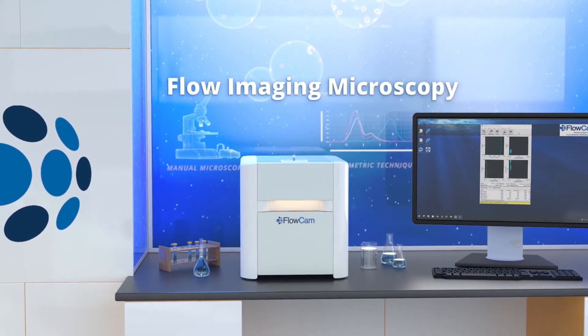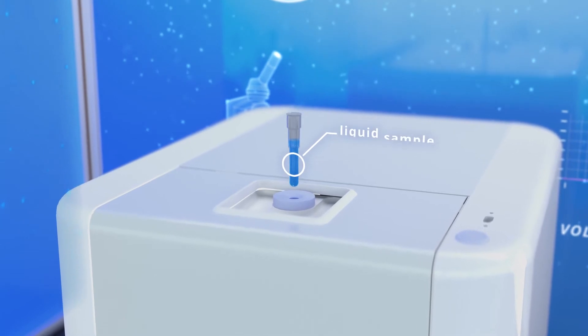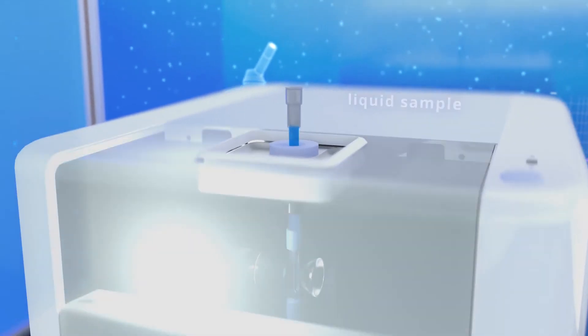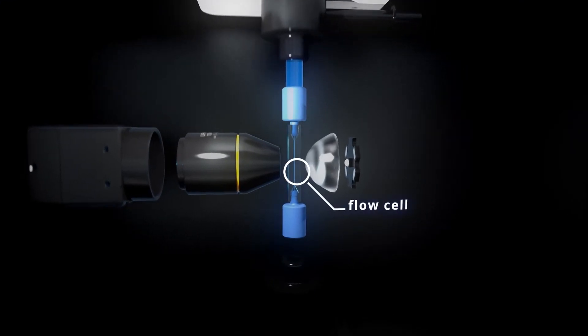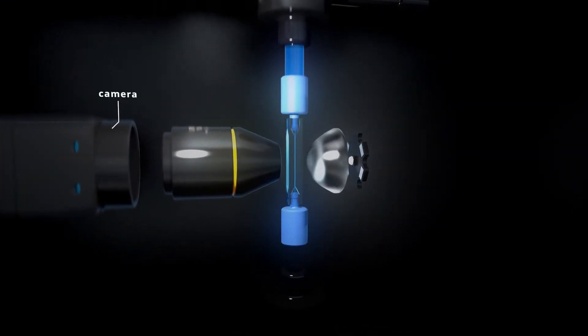Here's how it works. After a liquid sample is introduced into the top of the FlowCam, a software-controlled syringe pump pulls it through the flow cell and past the optical system within the device.